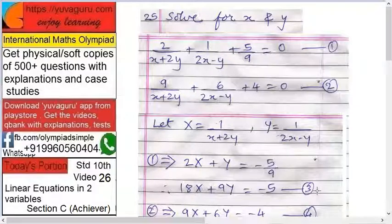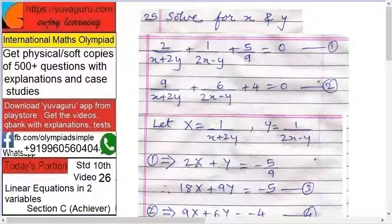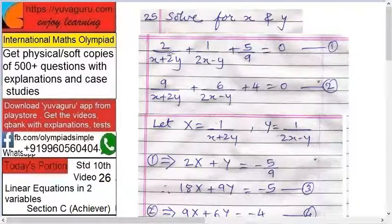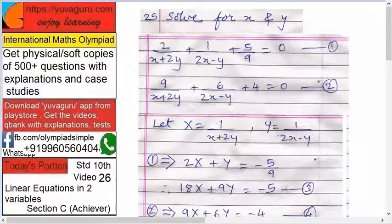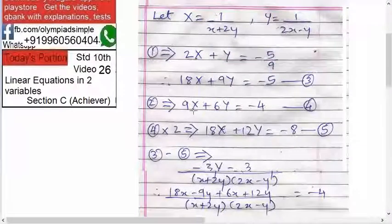equation number 3. Check this, what have we done? How did this 2X come? Because capital X is 1 upon x plus 2y, so this will be 2X. Now equation number 2, that also becomes the